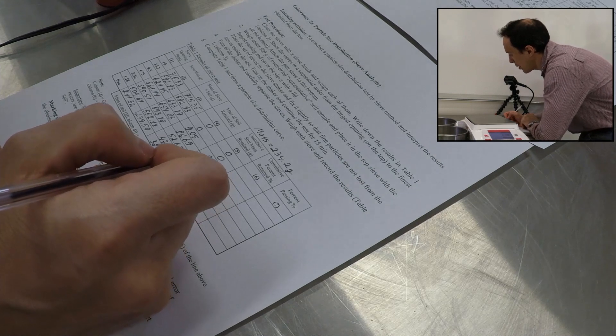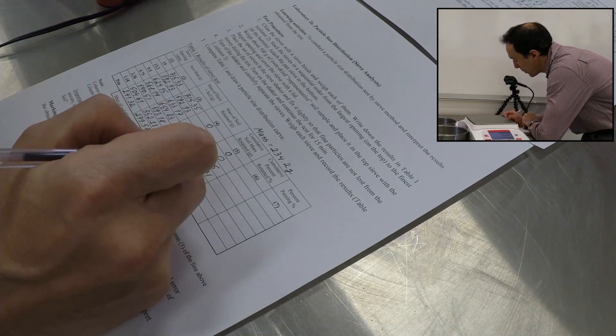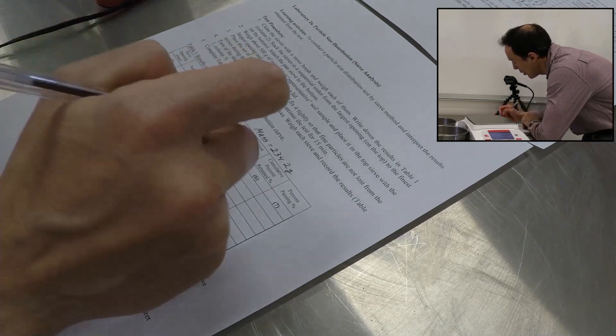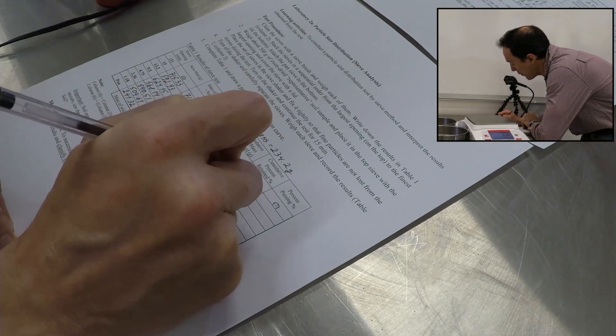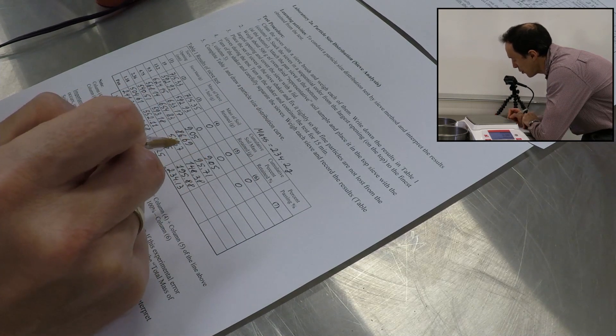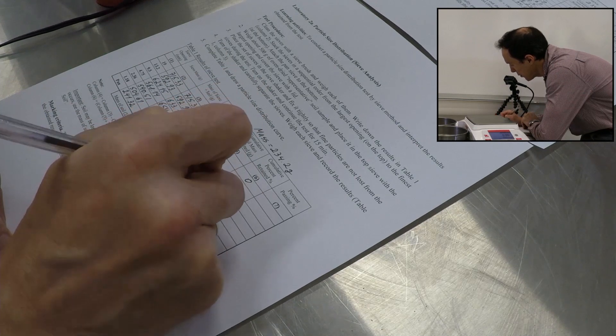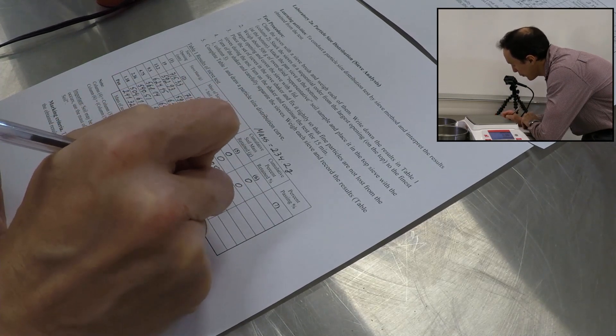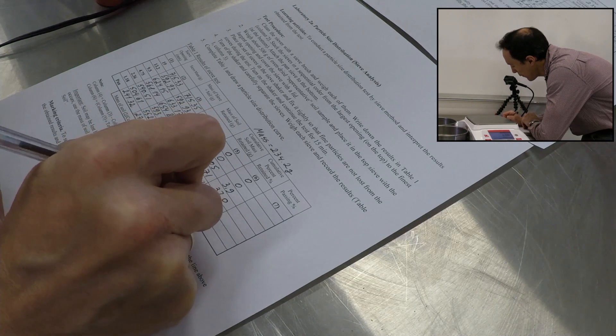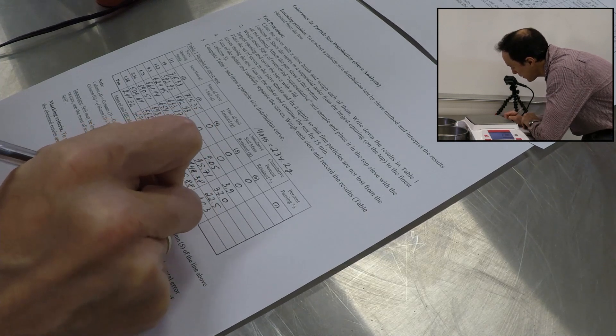Next column is cumulative percent retained. To get this one, we're going to take a number from column five and divide it by the mass, the total mass of the soil and change it to percentage. For the first two sieves, we didn't have anything, so we'll go with zero. Then we'll take this number from column five and divide it by the total mass, which is 234.13. It will give us approximately 3.9%. Then we'll do the same thing for the other sieves, about 37.0%, 22.5, 20.3, and 16.3.